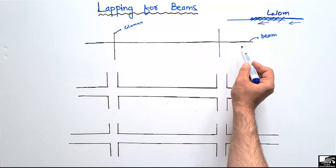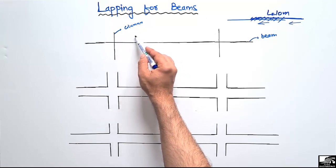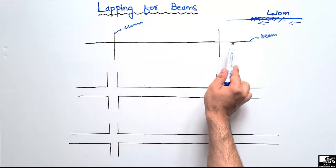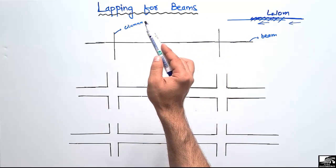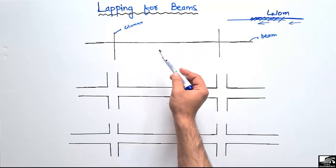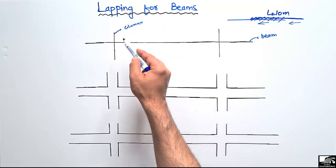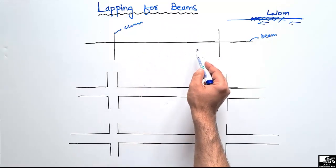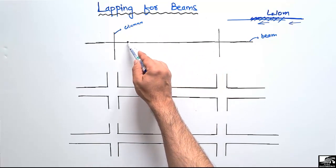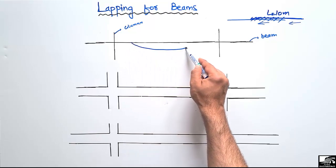This is a continuous type of beam. Upon loading with a uniformly distributed load, the beam will show some deflection and also some stresses. We call these bending stresses because the beam is a flexure or bending member. Upon loading, the beam will show bending.